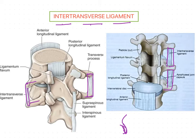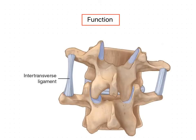So this is about the attachment of the inter-transverse ligament. Now we will see the function of the inter-transverse ligament. The inter-transverse ligament can be found on both sides — this is the right side and this one is the left side, observed from the posterior aspect. These inter-transverse ligaments are paired ligaments, just like ligamentum flavum.